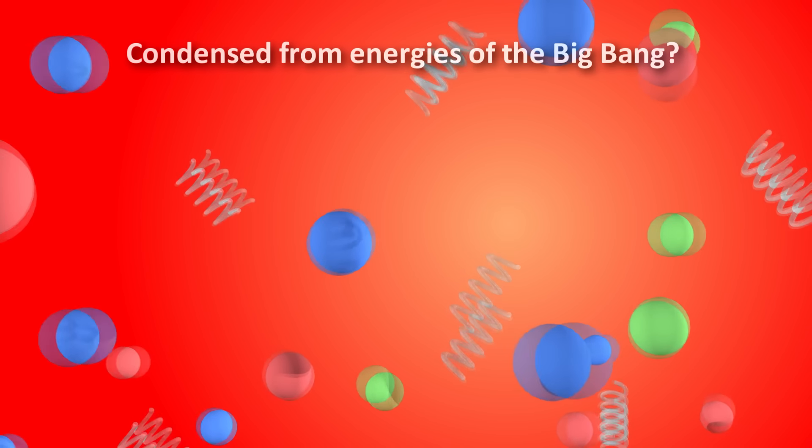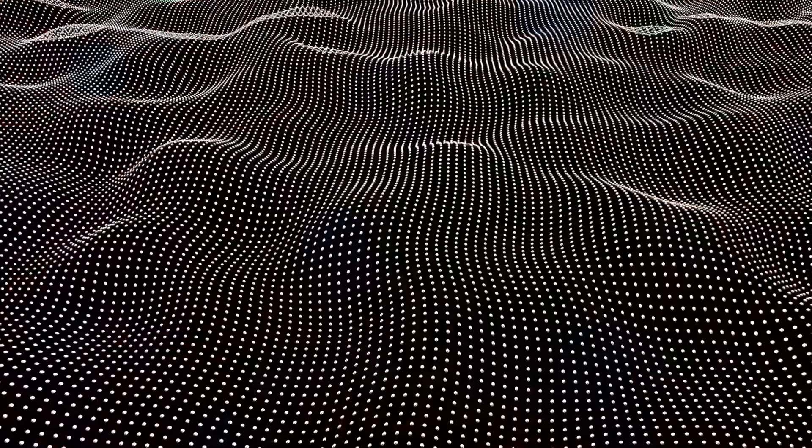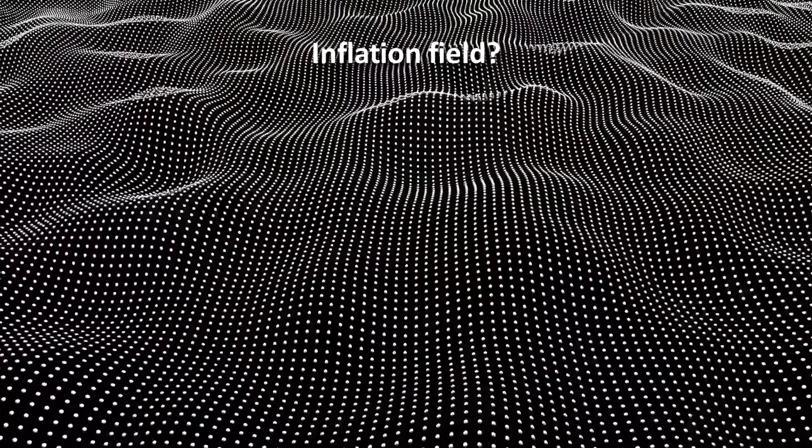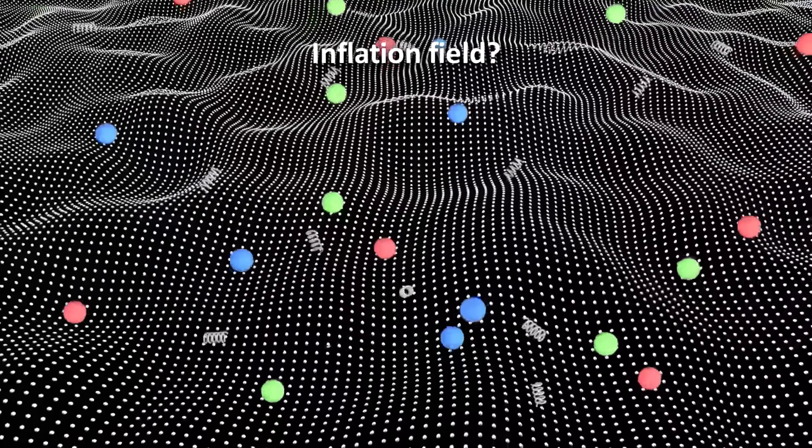Where these initial massless fundamental particles came from is still not known. It's possible they somehow condensed from the energies present at the big bang, or there might have been an initial scalar field, similar to the Higgs field, called the inflaton field, which consisted of inflatons that decayed to the fundamental particles we see today.